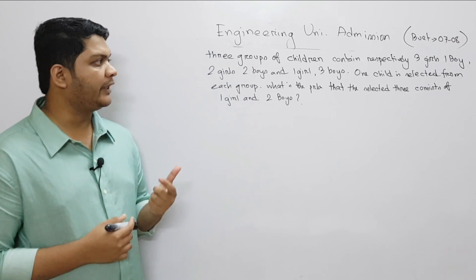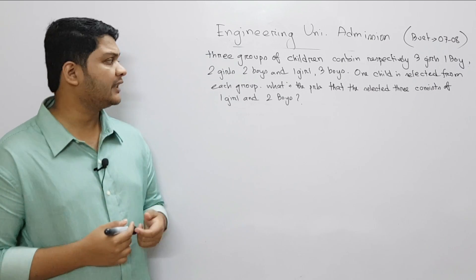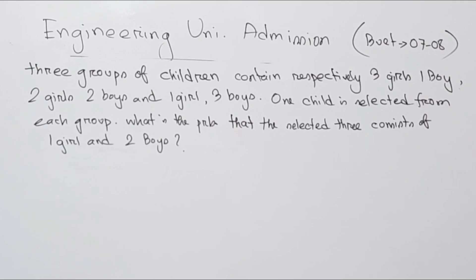I am ready to go to the next video, so let's look at the next video. Three groups of children containing respectively three girls, one boy, two girls, two boys, and one more girl, three boys. One child is selected from each group. What is the probability that the selected three consist of one girl and two boys?